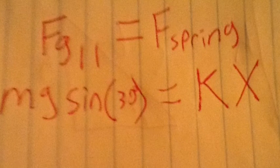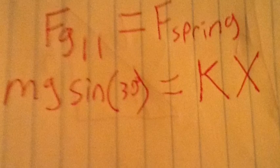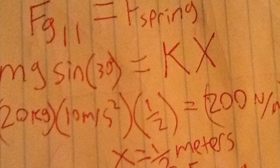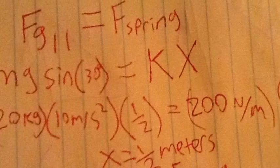This relationship can be rewritten as MG sine of 30 degrees equals kx. What this implies is that the upward spring force varies directly with the spring's compression. So as the spring compresses further, the force will be greater in the upward direction until the block accelerates upward. Thus, the block is at its maximum speed at the compression distance where the force of the spring just equals the force of gravity parallel. By substituting in the values, and then using algebra, we find that x equals one half meter.